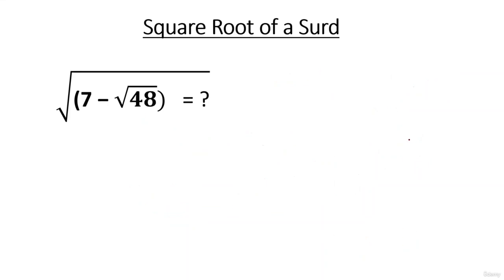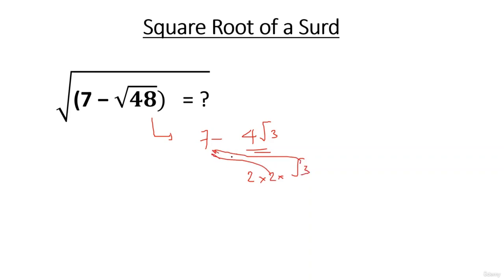Next, find the square root of 7 minus √48. Now √48 = √(16×3) = 4√3, so this becomes √(7 − 4√3). Observe that 4√3 can be written as 2×2×√3, and 2² + (√3)² = 4 + 3 = 7. So the expression is 2² + (√3)² − 2×2×√3, which is a² + b² − 2ab = (2 − √3)².